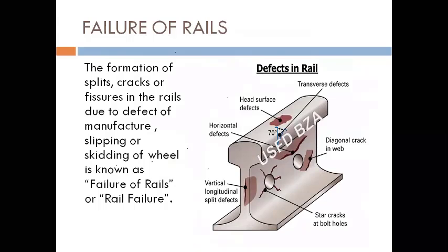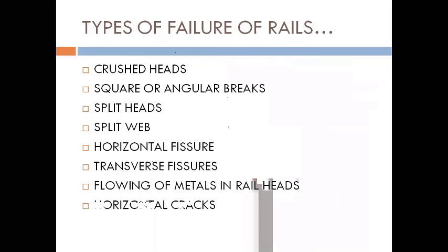Rail failure refers to the formation of splits, cracks, or fissures on the rails due to defects of manufacture, or slipping and skidding of wheels. The types of defects include: crushed heads, square or angular breaks, split heads, split web, horizontal fissure, transverse fissure, flowing of metal in rail heads, and horizontal cracks. We will discuss each one by one.